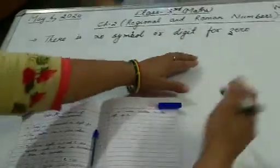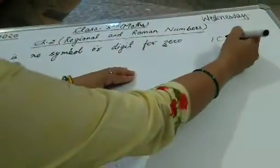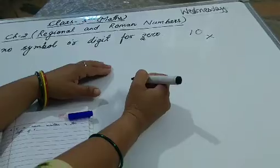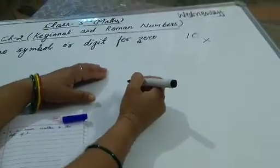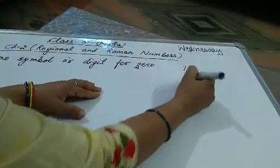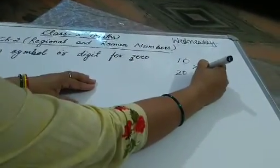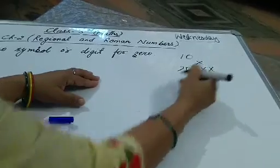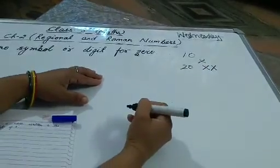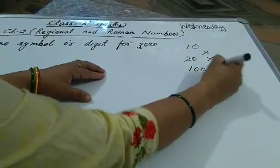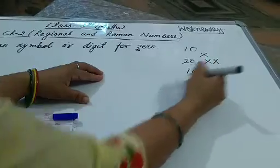So how will they write 10? How will they do zero, or how will they write 10? They write it as X. When they have 20, they will write X plus X. And for 100, they write C.